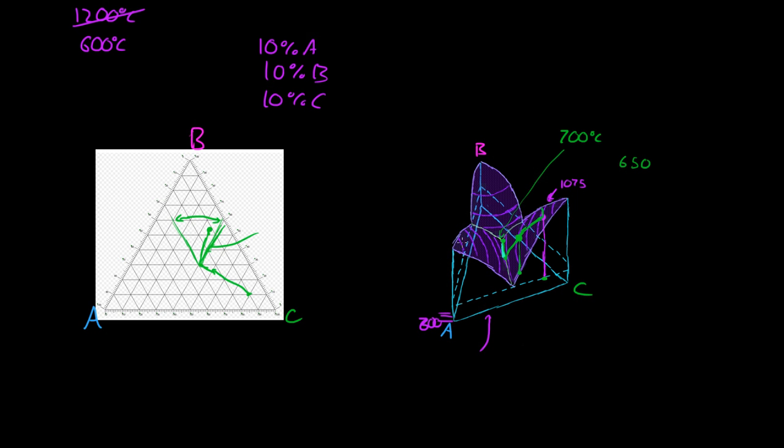But it doesn't necessarily have to be hitting straight for B. It just, if I mean, if it's on this line, it has to be between these two points, if it's at that point. So that's, and the reason for that is because C is crystallizing. So if we went too far this way, C would be going into the liquid.